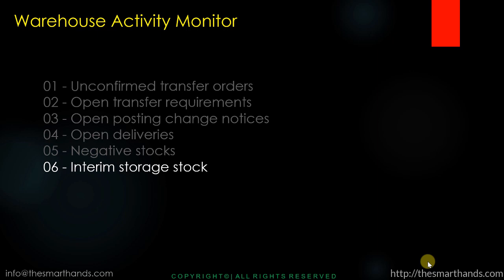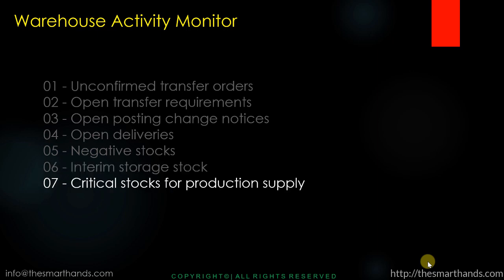The fifth object is negative stock in any storage bin. The sixth is stock in interim storage bins — if stock has been placed in an interim storage bin and hasn't moved for the last two or three days, it raises a question. Interim storage bins are only for temporary, imaginary storage — not permanent. The seventh and last object is critical stock for the production supply area: open transfer requirements created for production supply.